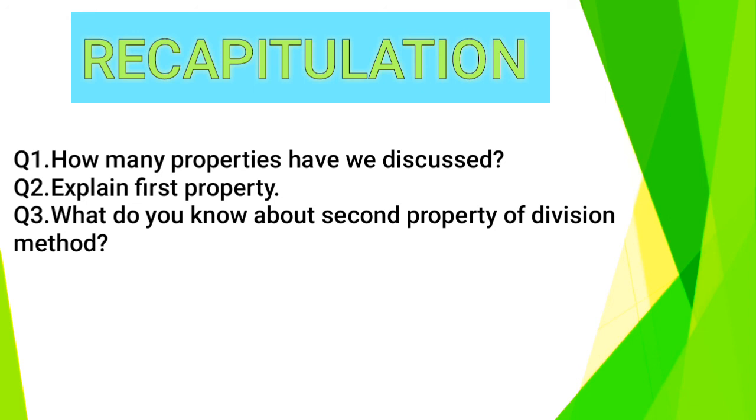Last question: What do you know about second property of division method? Second property is that if a number is divisible by two or more co-prime numbers, then that number is divisible by their product.